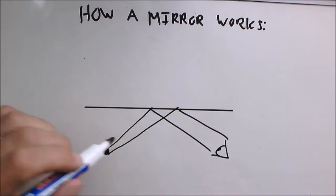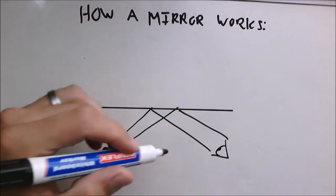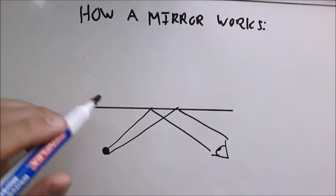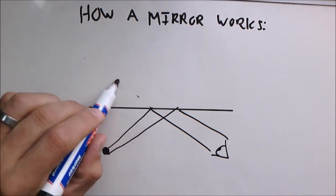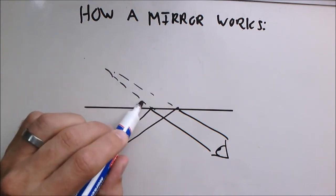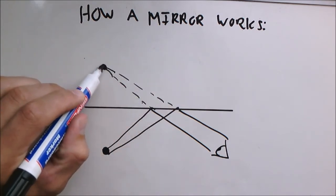But when you look at the mirror, your eye basically tricks you that you don't see the object over here. You actually see the object as if it is in a straight line.